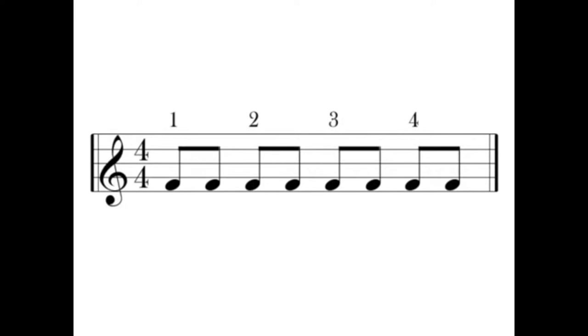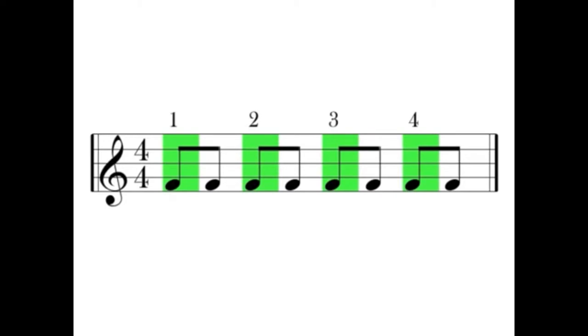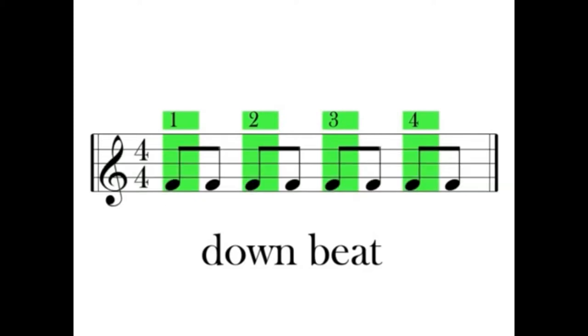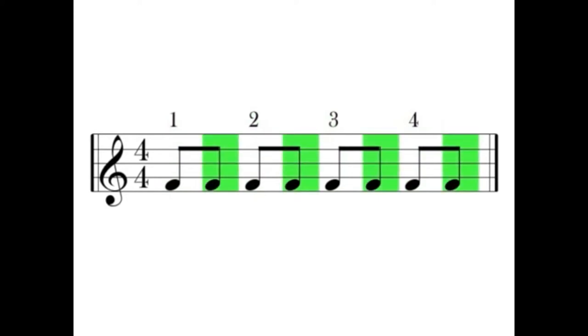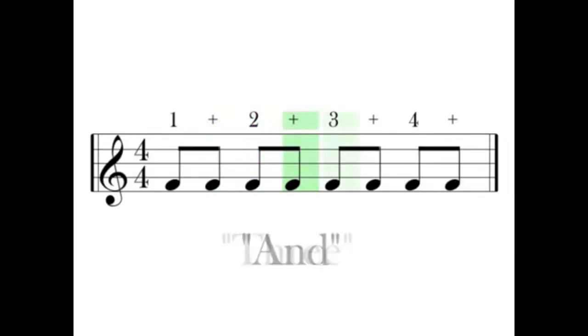You may ask, how am I supposed to count half of a beat? An eighth note is actually quite simple. In a situation like this, the first eighth note is counted as a beat, meaning one, two, three, four. This is known as the downbeat because it is the strongest part of the beat. The second eighth note is known as the upbeat and is counted by saying the word AND. One and, two and, three and, four and.